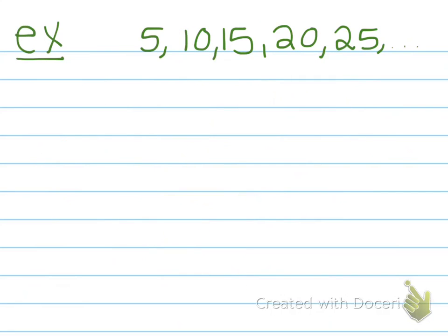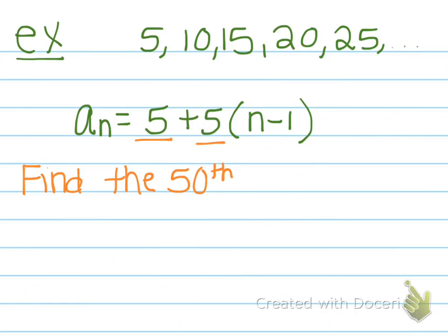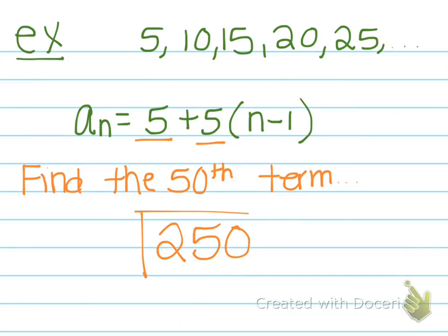This is the second example we looked at before. Take a second and see if you can come up with the explicit formula for this arithmetic sequence. The explicit formula would be a sub n equals 5 plus 5 times n minus 1. This first 5 represents the first term and the second 5 represents the common difference. So if you find the 50th term, you would get 250.